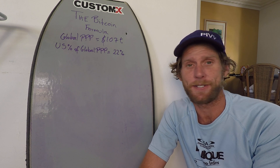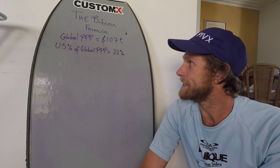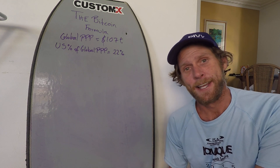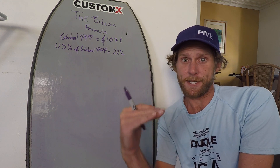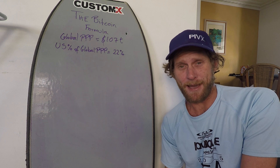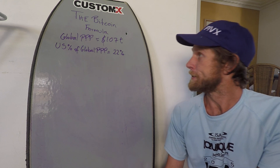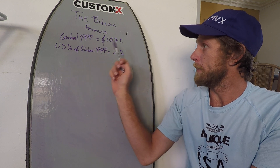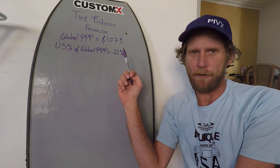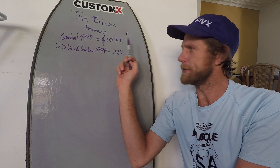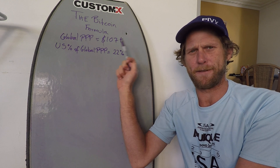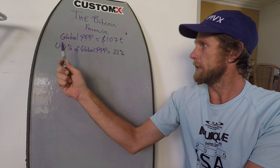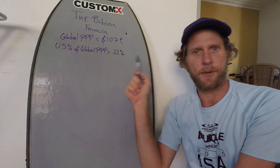It was Satoshi that started it all, so let's do some due respect and do Bitcoin. We're going to start with a couple of facts and then build in a couple of assumptions to complete the formula. Very simple maths. We're going to start with the Global PPP of $107 trillion, roughly — that's actually a 2014-15 figure. And we're going to use the US dollar percentage of the Global PPP at 22%.